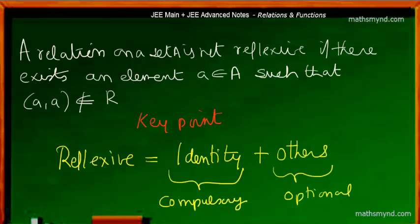For a reflexive relation on a set A, all the ordered pairs which we find in an identity relation on that particular set will be present, plus other ordered pairs may also be present. So that's the point — it may seem confusing but it's quite simple. Let us take an example to clear the confusion.